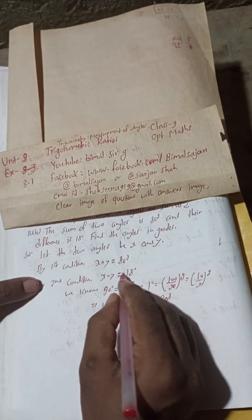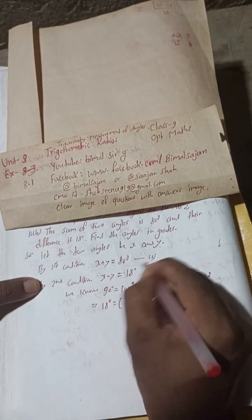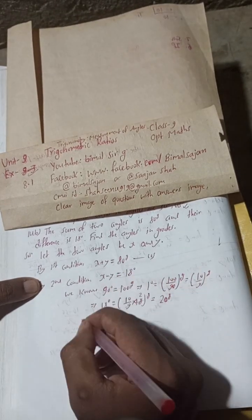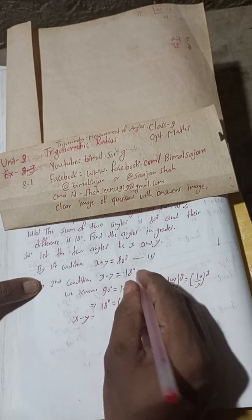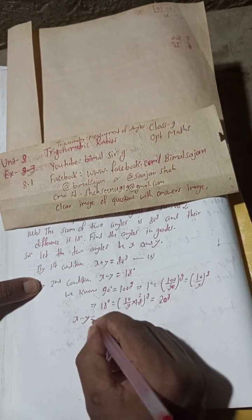Therefore, this equation becomes x minus y equals 20 grade. This is our equation 1 and this is equation 2. Now solve this equation by adding.